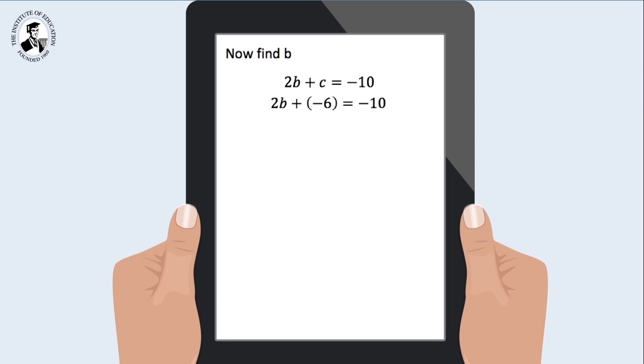So 2b minus 6 is equal to minus 10. I'm going to add 6 to both sides. So 2b is equal to minus 4. And b is equal to minus 2.